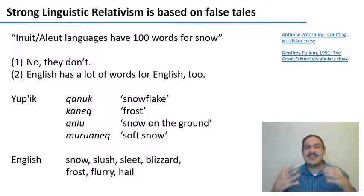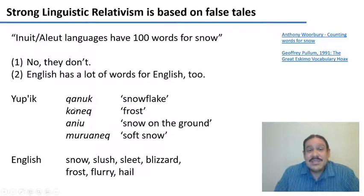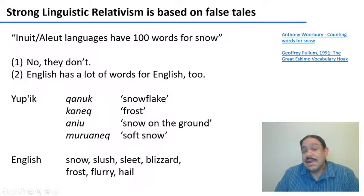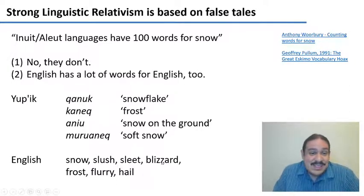First of all, these languages don't have a hundred words for snow. Yupik, for example, is an Aleut language from Alaska, and it does have several words for snow — including kanuk (a snowflake), kanek (frost), anew (snow on the ground), and murwanek (soft snow). But English also has different words for snow, like slush, sleet, blizzard, frost, flurry, and hail.